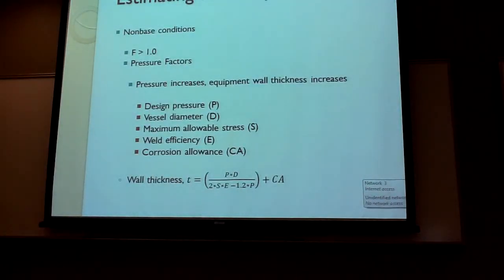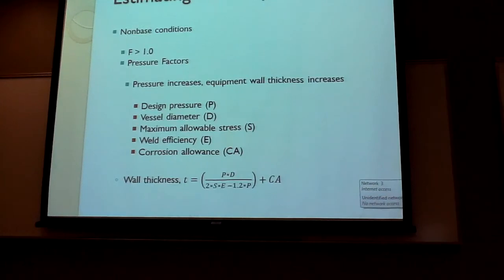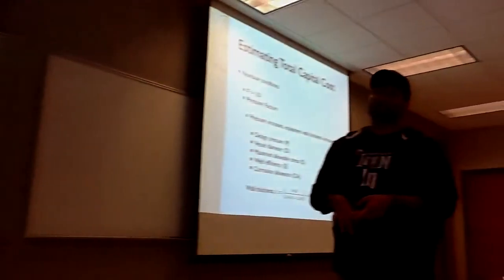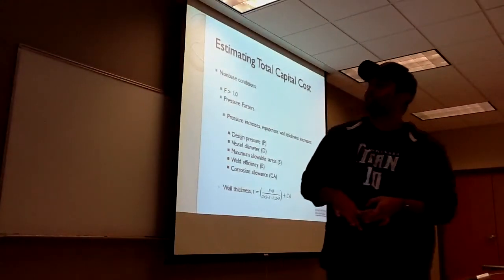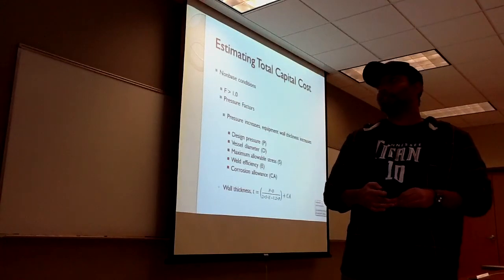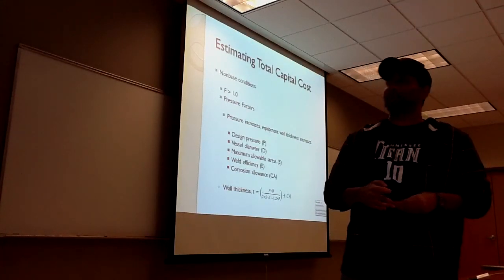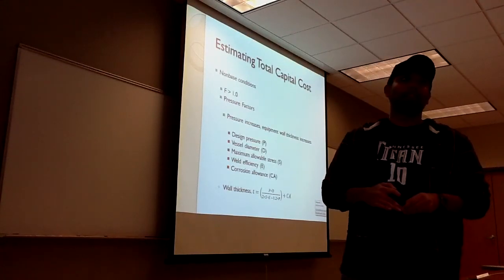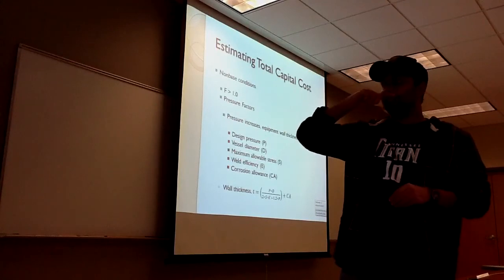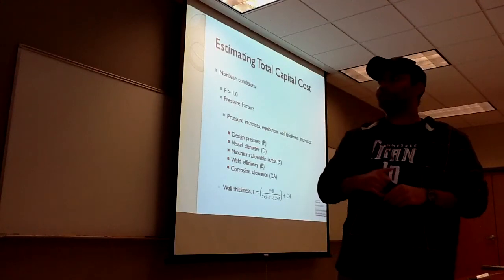As far as pressure factors, you should consider defined pressure, vessel diameter, maximum allowable stress, weld efficiency, and corrosion allowance. You then sum it all together using the equation at the bottom.